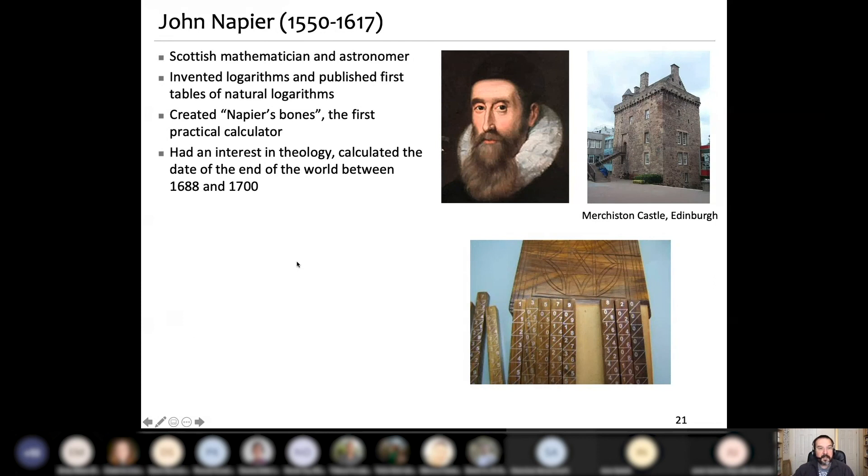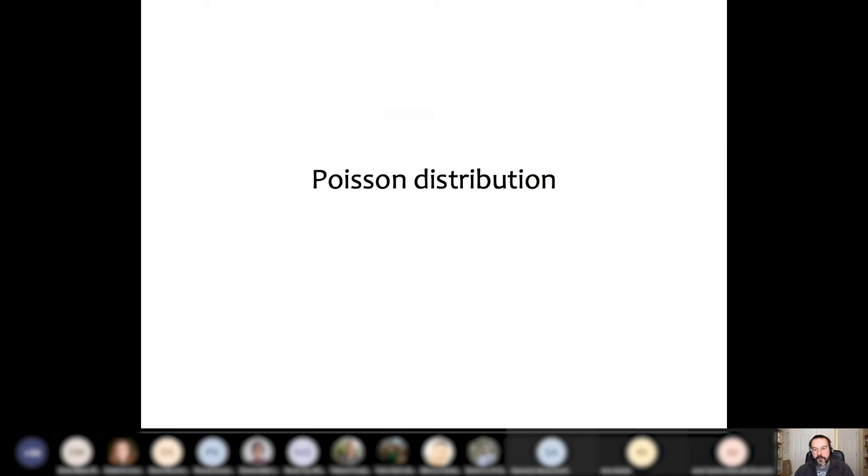Speaking of logarithms, I have to mention John Napier, a Scottish mathematician and astronomer. He invented logarithms and first published tables of natural logarithms. He also created Napier's bones. It was the first practical calculator made of wood like this one. And he was born in Merchiston Castle in Edinburgh, which now is right in the centre of John Napier at Edinburgh University, named after him. He had the knowledge of theology. He calculated the date of the end of the world somewhere between 1688 and 1700. He was also involved in alchemy and necromancy. So very universal scientist.